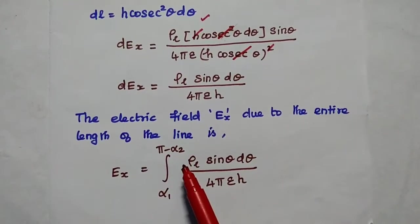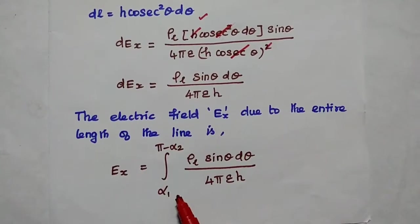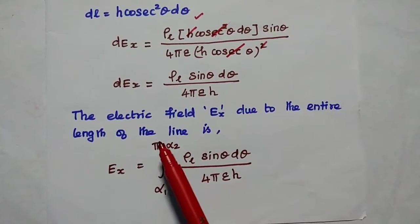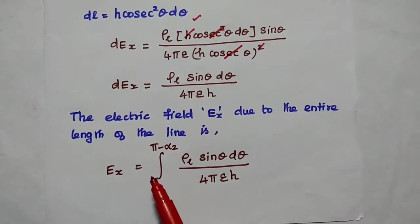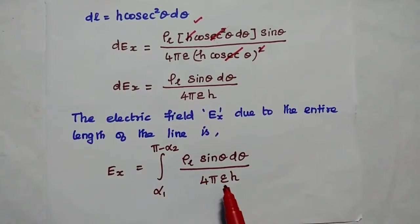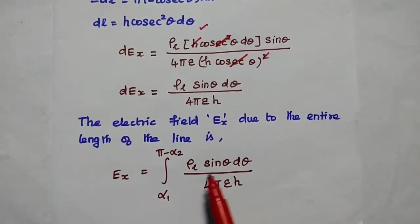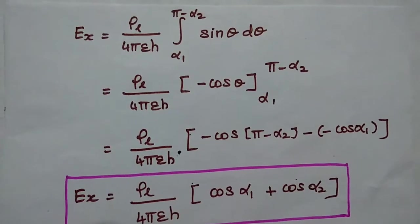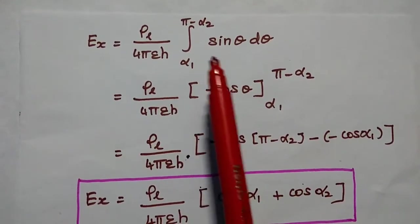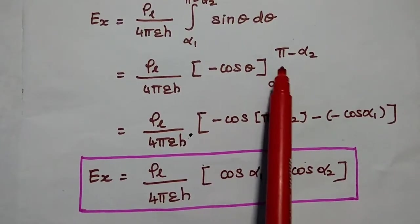The total Ex is obtained by integrating from α₁ to π − α₂, where α represents the angles at each end of the line. Since a full line spans 180°, the upper limit is π − α₂. So Ex = (ρL / 4πεh) · ∫[α₁ to π−α₂] sinθ dθ. The integral of sinθ is −cosθ, evaluated from α₁ to π − α₂.